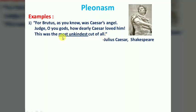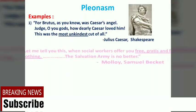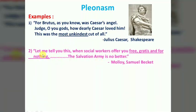यहाँ पर देखें — 'most' भी है और '-est' का भी इस्तेमाल है, यानी यहाँ double superlative है। यह बात अलग है कि Shakespeare generally iambic pentameter में लिखते थे, और इस line को iambic pentameter में रखने के लिए 'most' और 'unkindest' दोनों का इस्तेमाल किया। लेकिन दोनों में से एक हटा दो — meaning में कोई फर्क नहीं। इस तरह अनावश्यक शब्दों का इस्तेमाल Pleonasm कहलाता है।